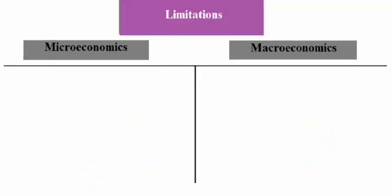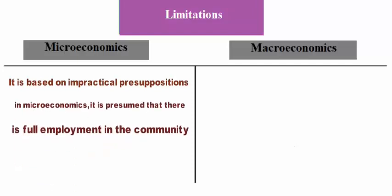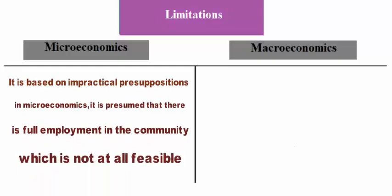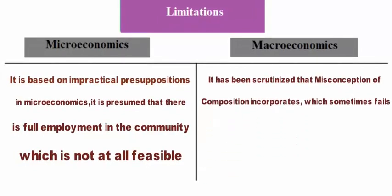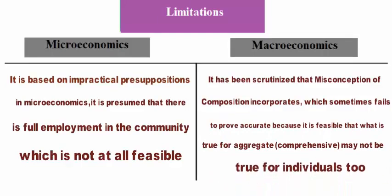Sixth: Limitations. Microeconomics is based on impractical presuppositions — it is presumed that there is full employment in the community, which is not at all feasible. Macroeconomics has the fallacy of composition, which sometimes fails to prove accurate because what is true for the aggregate may not be true for individuals.